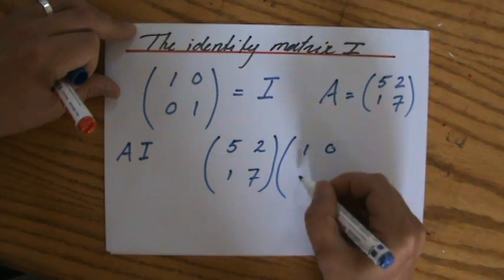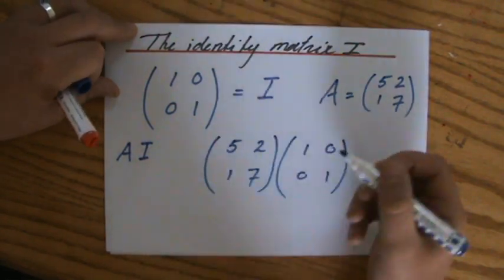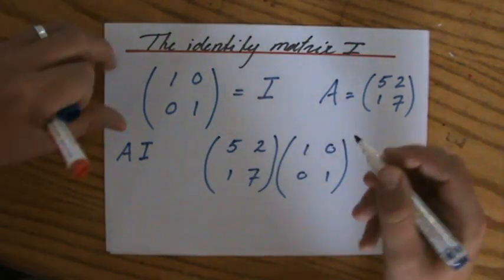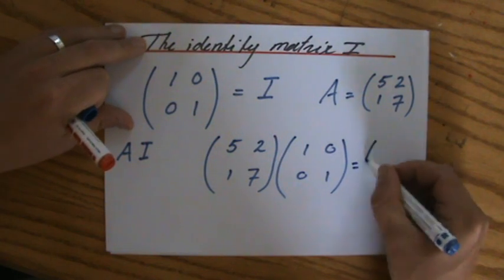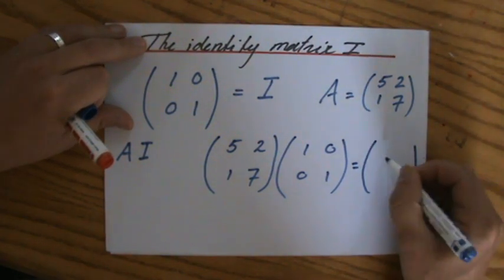[[1, 0], [0, 1]]. Well, a 2 by 2 multiplied by a 2 by 2 matrix, the answer is going to be a 2 by 2 matrix, as I showed you before.